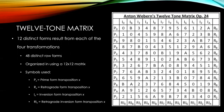Often composers organize these row forms into a 12 by 12 matrix. As you can see in this matrix, several different symbols are used to indicate which transformation is being discussed. P is used to indicate the prime form, R indicates a retrograde, I indicates an inversion, and RI indicates the retrograde inversion. The subscript X that accompanies all four symbols simply indicates which transposition one is discussing.